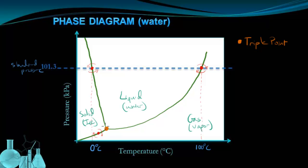The triple point is the pressure and temperature at which all three phases can exist simultaneously. So at this one specific condition of pressure and temperature, you can have ice, water, and vapor all at the same time.